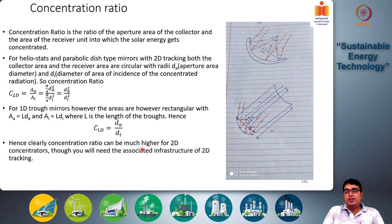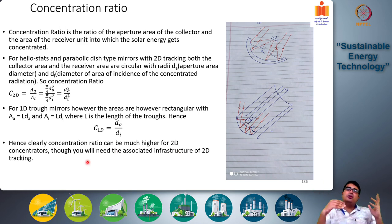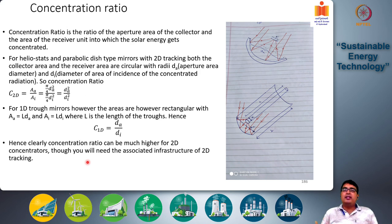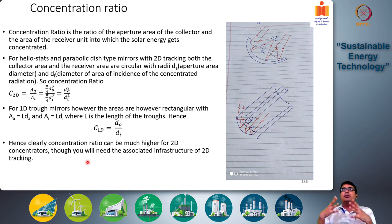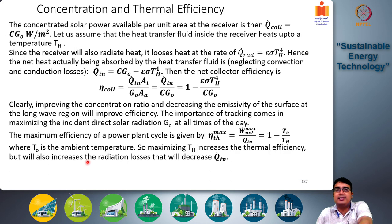Clearly, concentration ratios can be much higher for 2D concentrators, which requires the associated 2D tracking infrastructure — increasing cost and complexity — but you get the dividend that your concentration ratio is higher. Higher concentration ratio means greater energy density at the receiver and greater temperature, which is very useful for improving system efficiency.